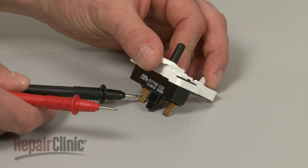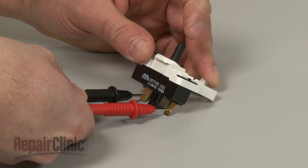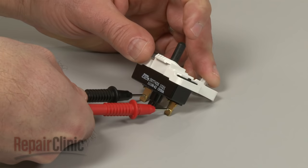Use a probe to touch one of the switch's terminals and the second probe to touch the other terminal. Now actuate the switch.